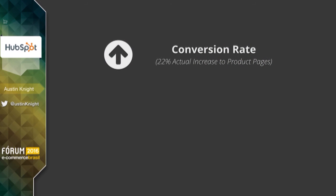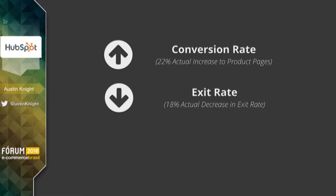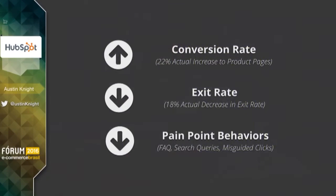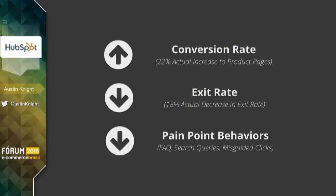We saw from this testing and iteration that our conversion rate went up. Our exit rate went down — so people were less likely to leave the site. And also pain point exhibiting behaviors went down. People were less likely to do weird things like go directly to our FAQ from our homepage — instead they would just go directly to the products. So we knew that the design was performing at a better rate.